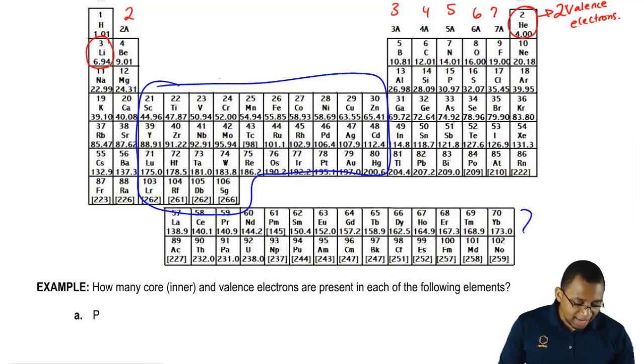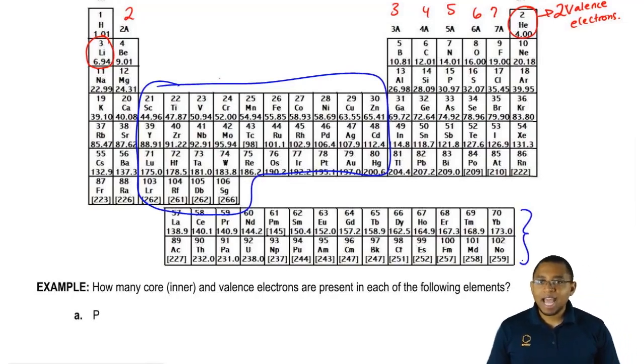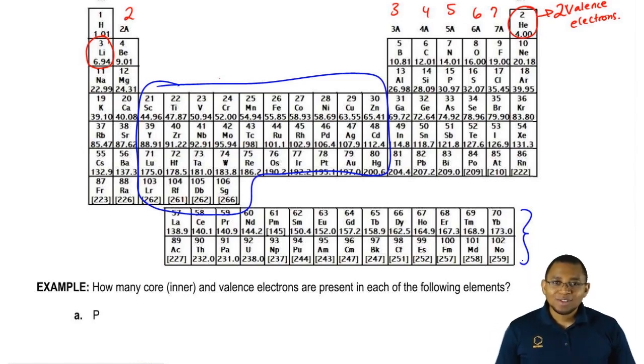The lanthanides and the actinides down here, because they have f electrons, f orbital electrons, we'd have to use quantum theory in order to solve the number of valence electrons. This is just Chem 1, so you don't have to do quantum theory. So if they're going to ask you for the number of valence electrons for transition metals, it would be these transition metals in here.